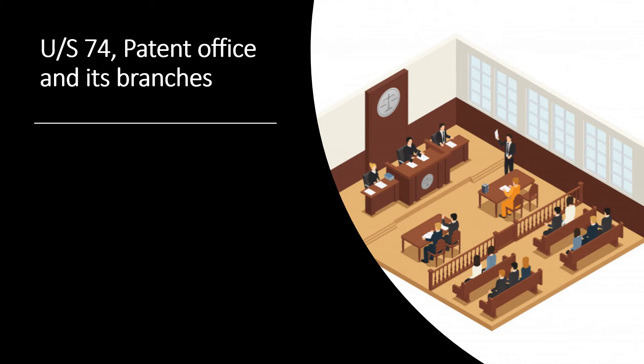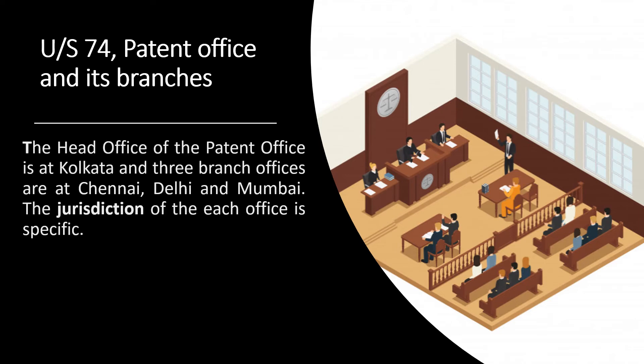Under Section 74, patent office and its branches, the word jurisdiction has been used with respect to the specific office in which one can file a patent application. The head office of the patent office is in Kolkata, and there are three branch offices in Chennai, Delhi, and Mumbai. The jurisdiction of each office is specific, meaning an applicant from a particular state can file a patent application only in a specific patent office.